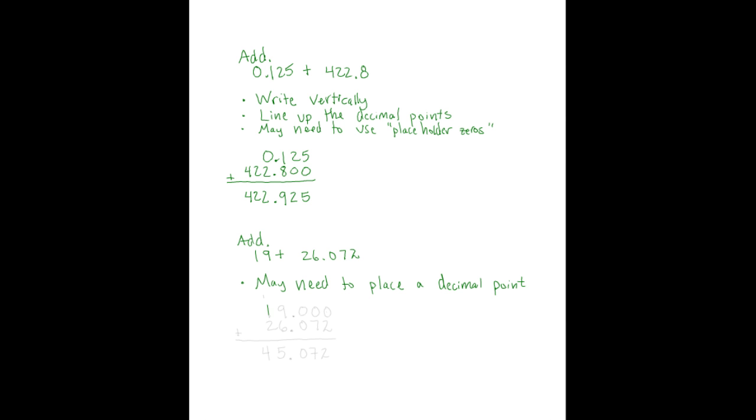So when we write this, we'll write it as 19 followed by a decimal point, and to that we're going to add 26.072. Notice that we lined up the decimal points just like we did in the previous problem. Also similar to the previous problem, we need placeholder zeros, and we will place them above the 0 and the 7 and the 2.